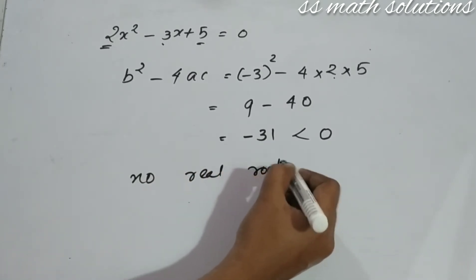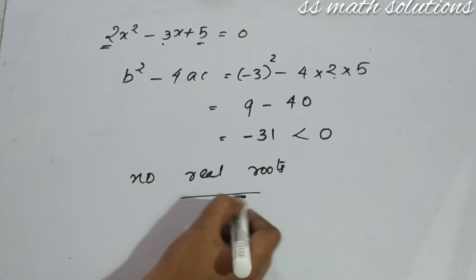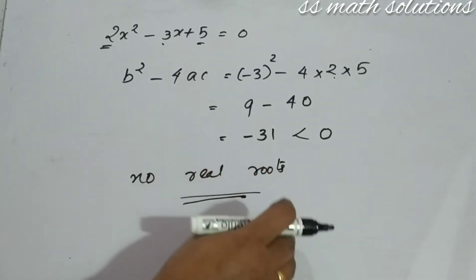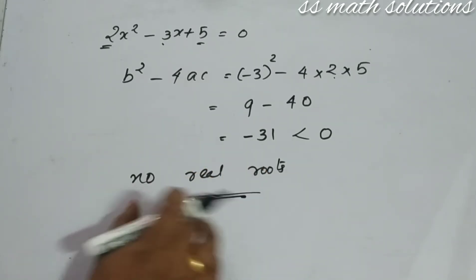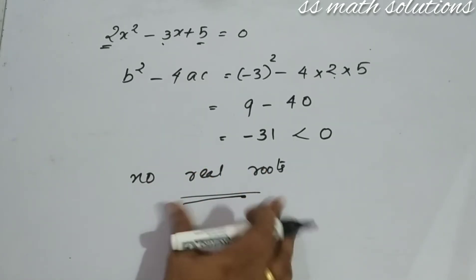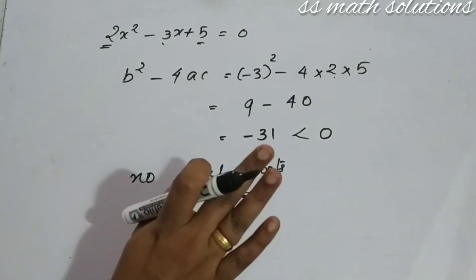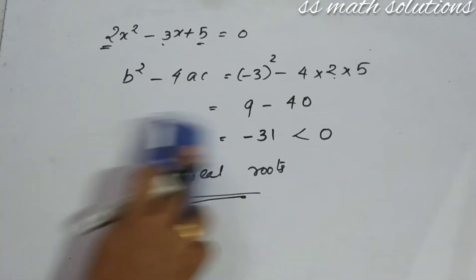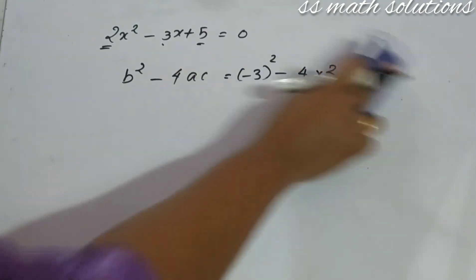According to our condition, if B squared minus 4AC is less than zero, the equation has no real roots. So the nature of roots for this equation is: no real roots. If you are asked to find the nature of roots, the answer is no real roots.